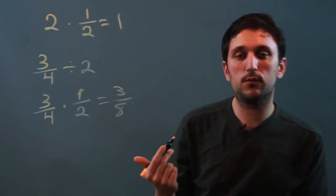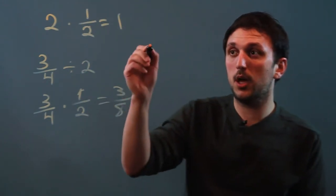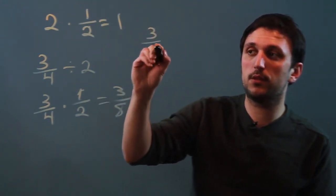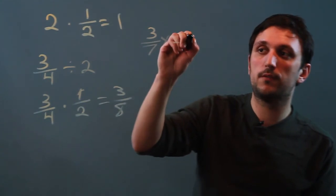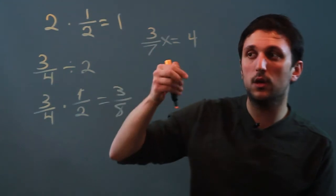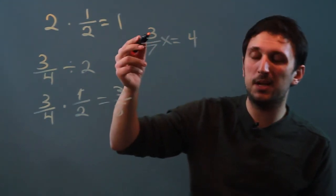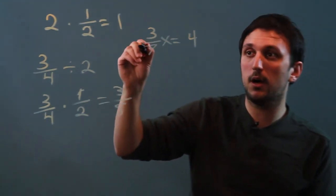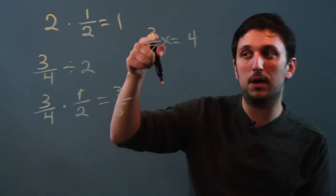Now another thing we can do is if we are doing an algebra problem and we have 3 sevenths x equals 4. We want to solve for x and we have this fraction coefficient. We can divide by 3 sevenths or we can multiply both sides of the equation by the reciprocal. Multiply by 7 thirds.